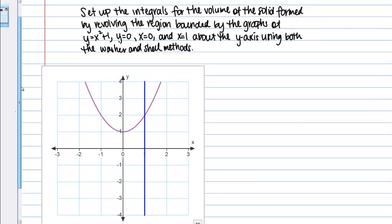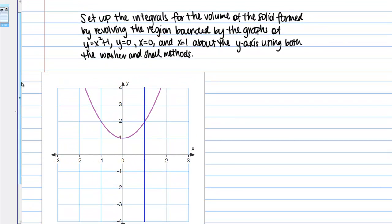We have a graph of the region. We have the parabola y = x² + 1, y = 0 and x = 0 are just our axes, and x = 1 is this vertical line, so region R is this bounded region. We are rotating R around the Y axis in this case.